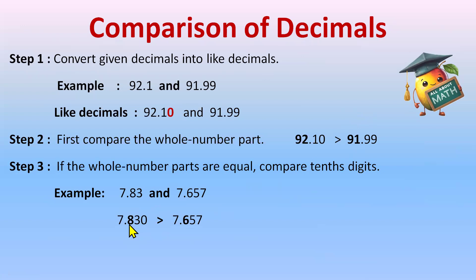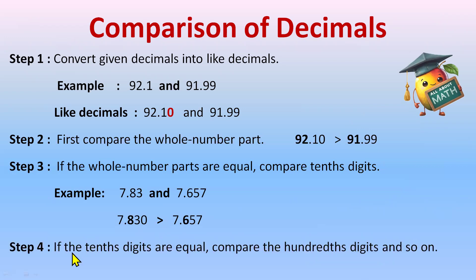After inserting the zero, check the tenth place: this is eight, this is six — eight is greater. So 7.830 is greater than 7.657. If the tenth digits are also equal, then compare the hundredths digit; if hundredths are equal, compare the thousandths digit, and so on.